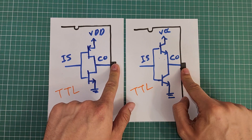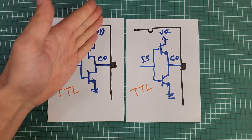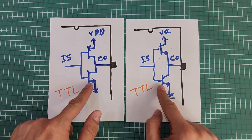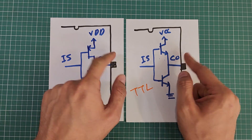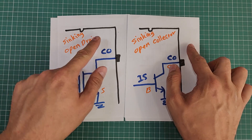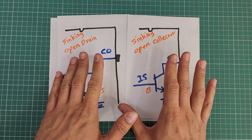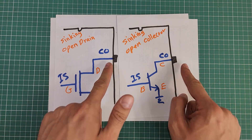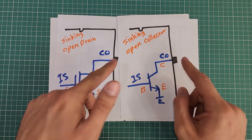By activating a TTL output — no matter which one, a BJT TTL or a FET TTL — VCC or VDD voltage will appear on the output, and by deactivating it, zero or ground voltage will appear on the output. On the other hand, by activating an open collector or open drain output, the output will be connected to ground or zero volts, and by deactivating an open collector output, it will disconnect from ground and there would be no voltage on the output. The output will be left in the air — not zero volts, but no voltage at all — and this brings us many advantages.